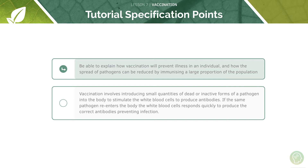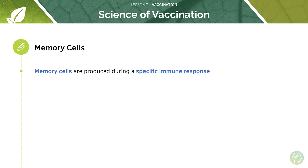We have these cells called memory cells which are produced during a specific immune response. These memory cells are derived from a type of cell called a B cell, which is just a type of white blood cell — it's a lymphocyte.